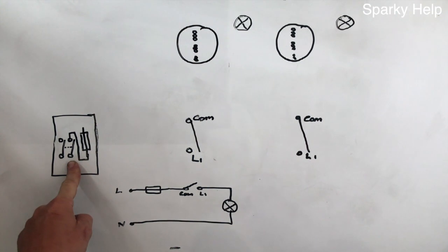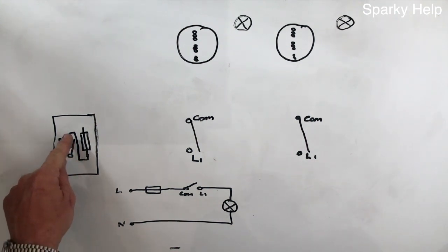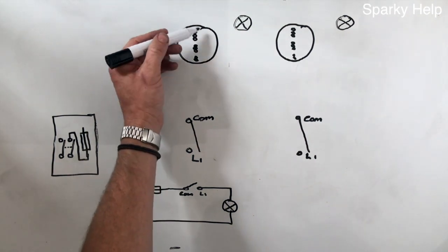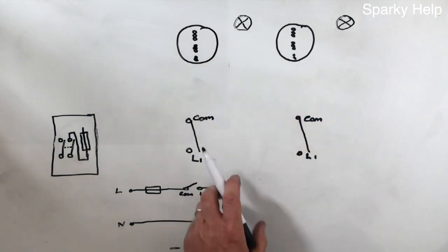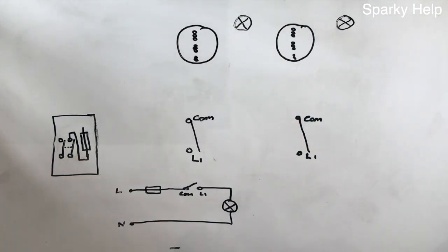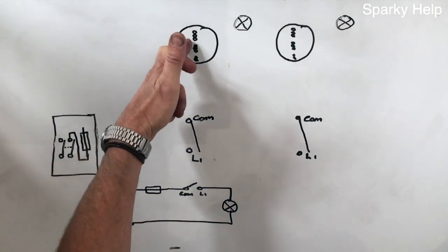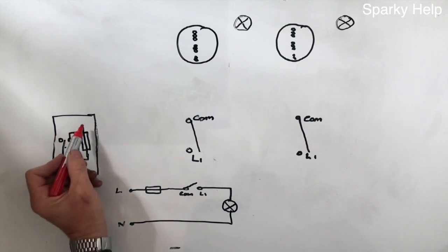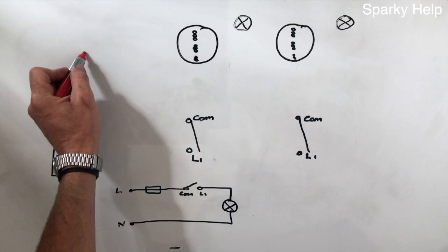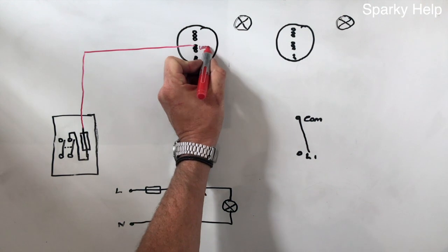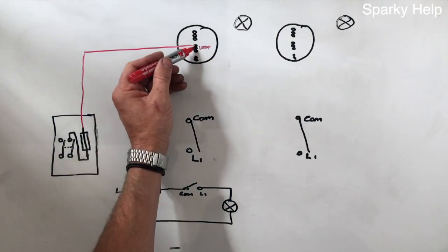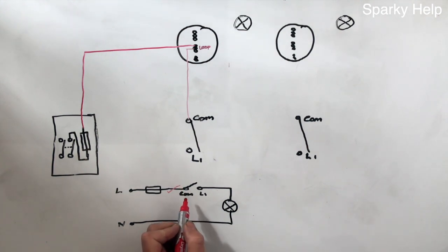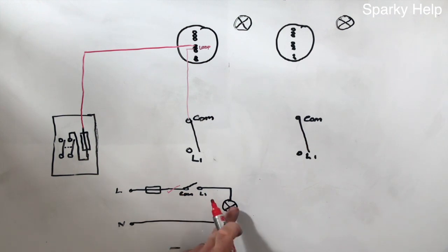Here we have our distribution board or consumer unit with our main switch. The line conductor comes in and goes through our fuse; here's our neutral going to a neutral bar. We've got our typical three-plate ceiling rose, our lamp, and our switch. The rule of three-plate is the live feeds go to the ceiling rose. So the red — the line conductor — comes up and goes to the loop in the middle, and being three-plate, we then take that down to the common in the switch.